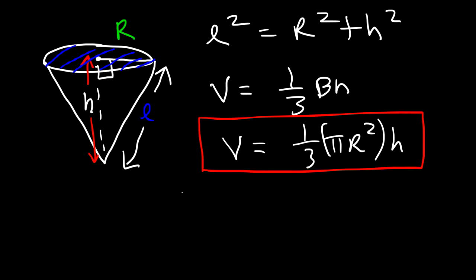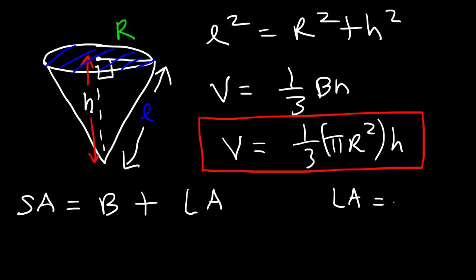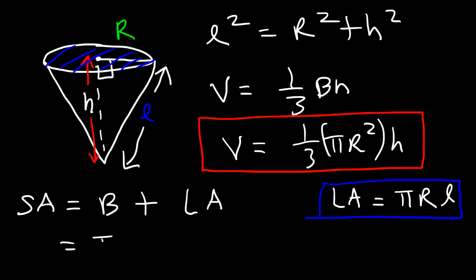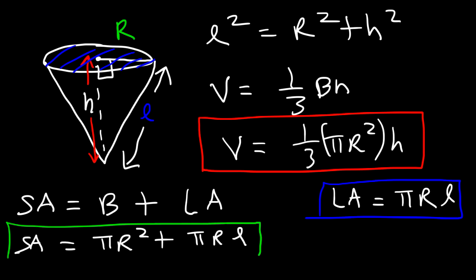To find the surface area, you need to know that the surface area equals the area of the base plus the lateral area. The lateral area is π times r times the slant height l. So the full surface area is π r² plus π r l.